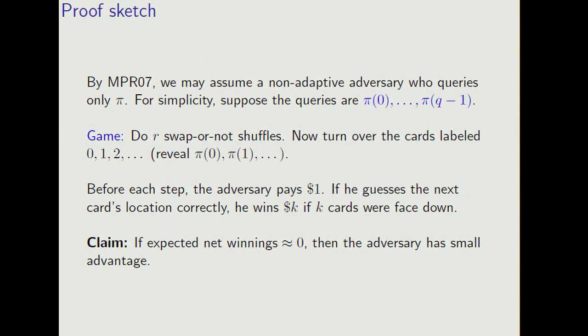It's related to the following game. Do R swap-or-not shuffles. Now turn over the cards labeled 0, 1, 2, 3, and so on. Now before each step, the adversary is going to guess at the location of the next card. If he guesses right, he wins K dollars if there were K possibilities. But he pays $1 each step to play.